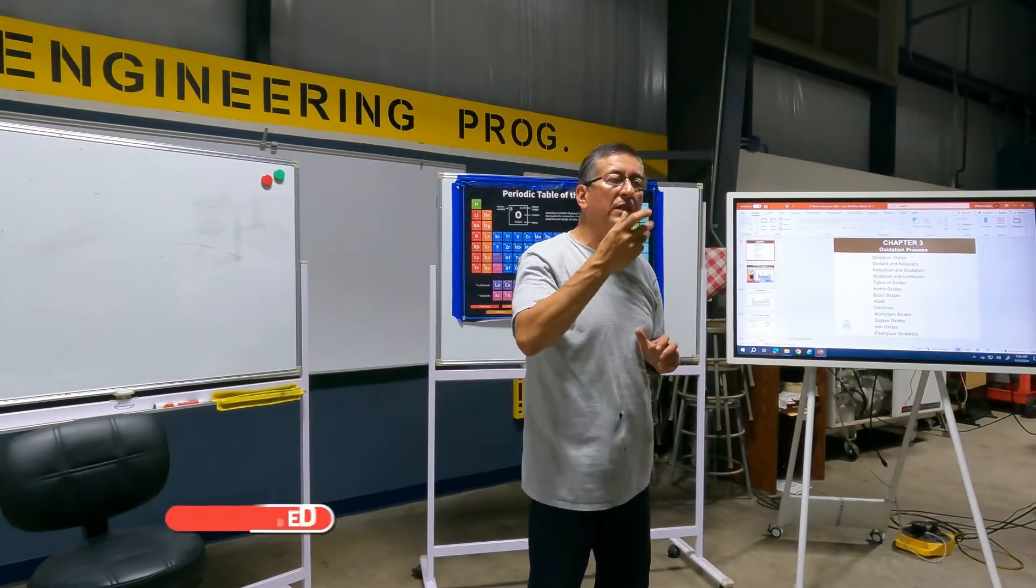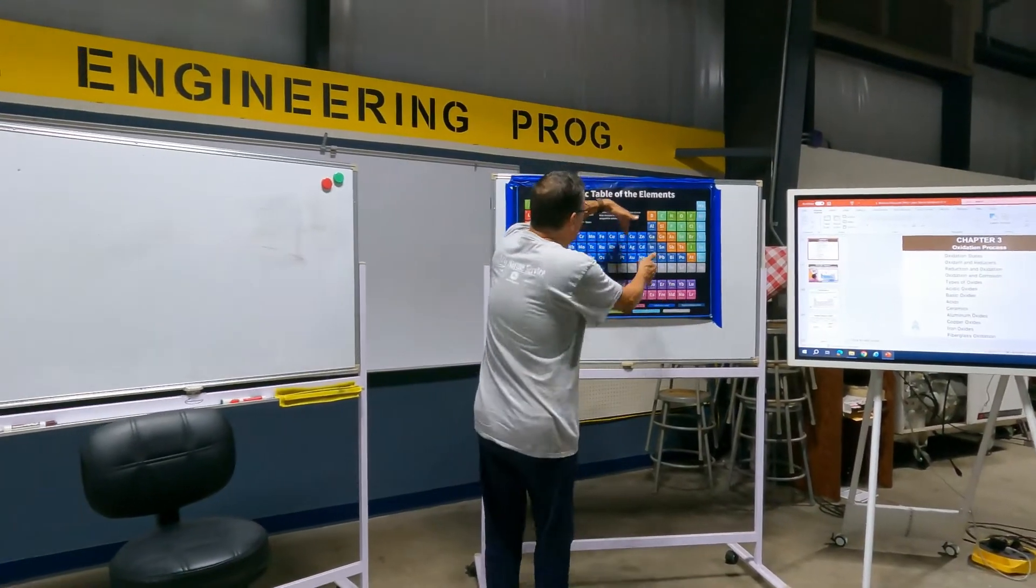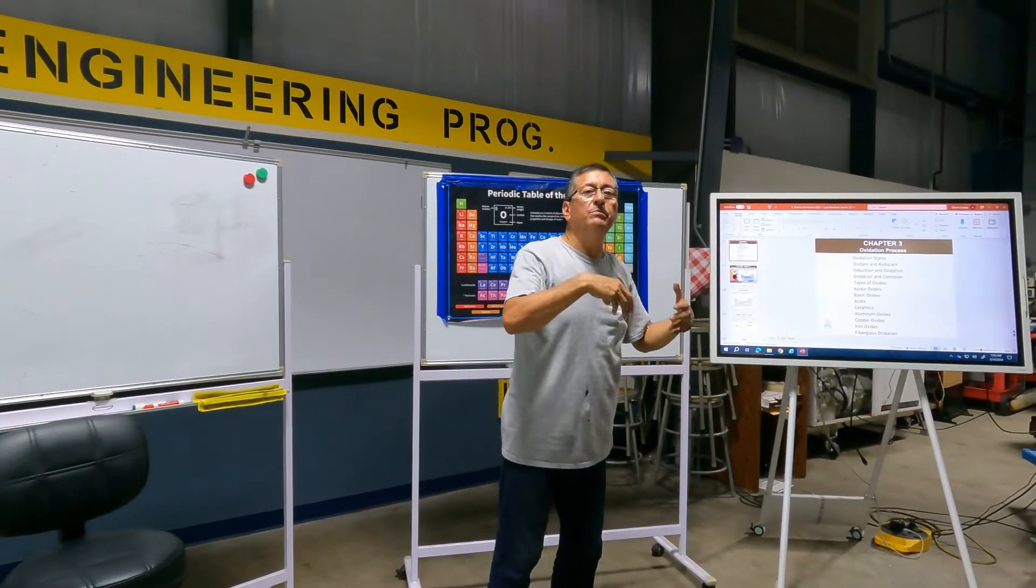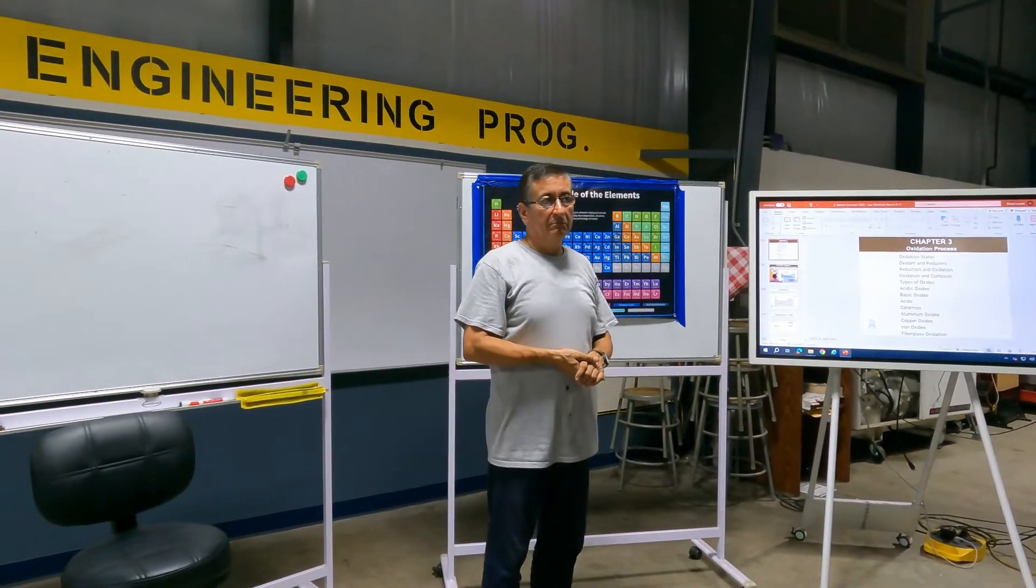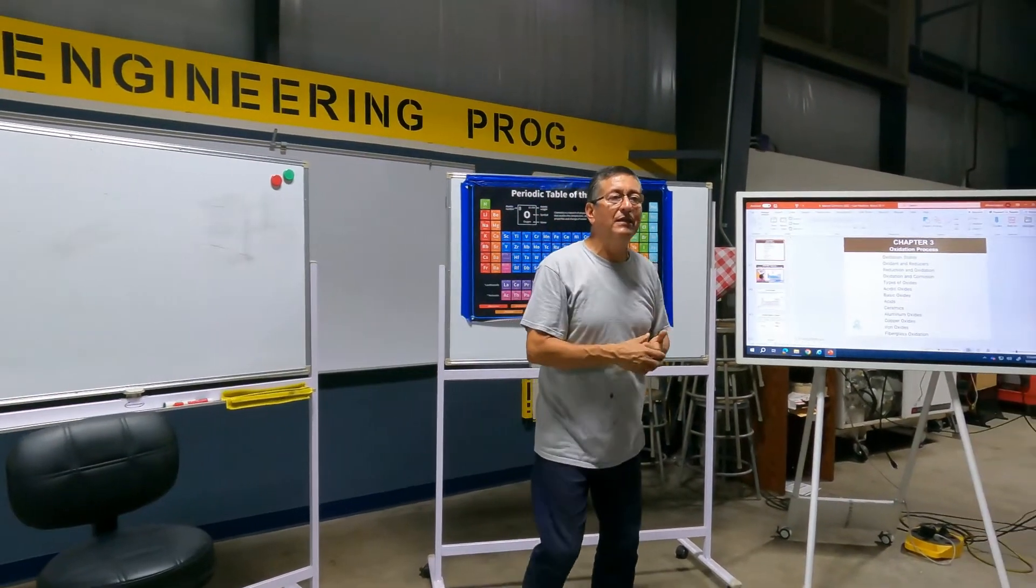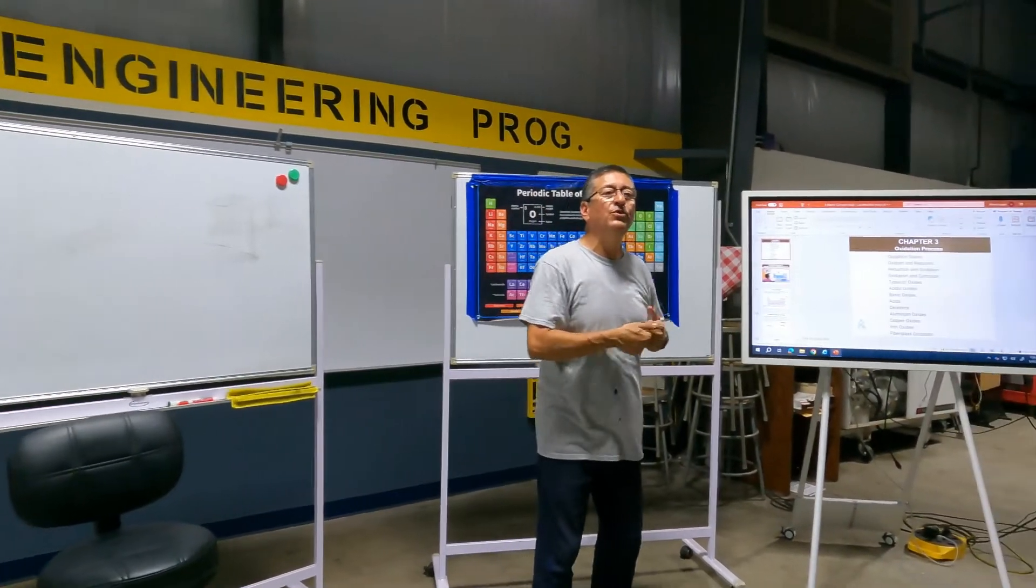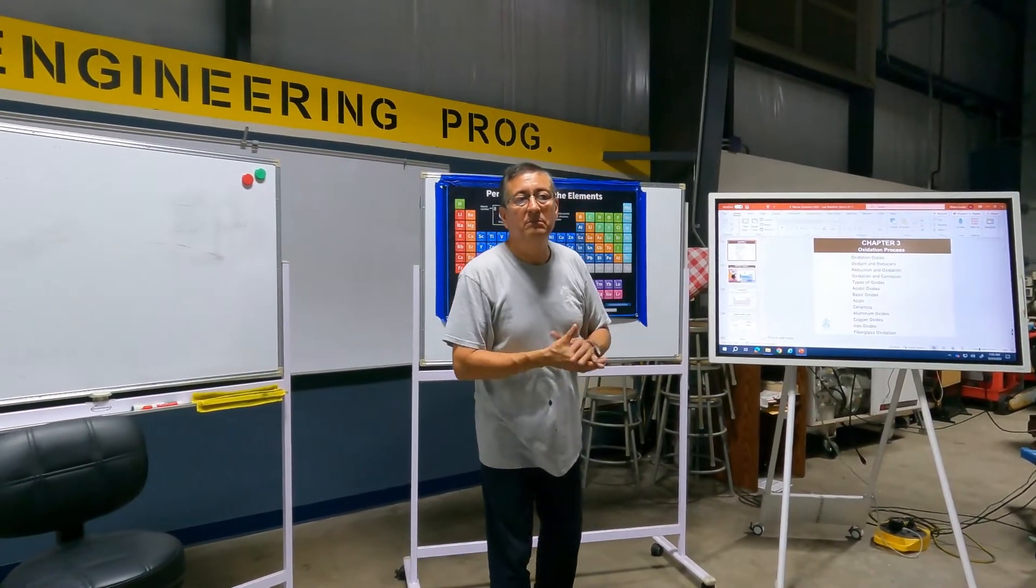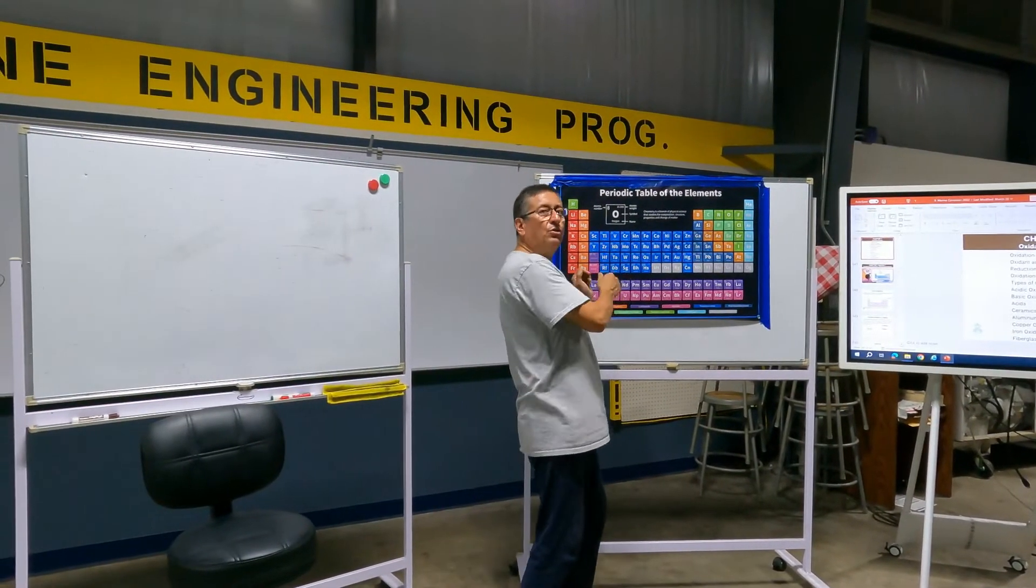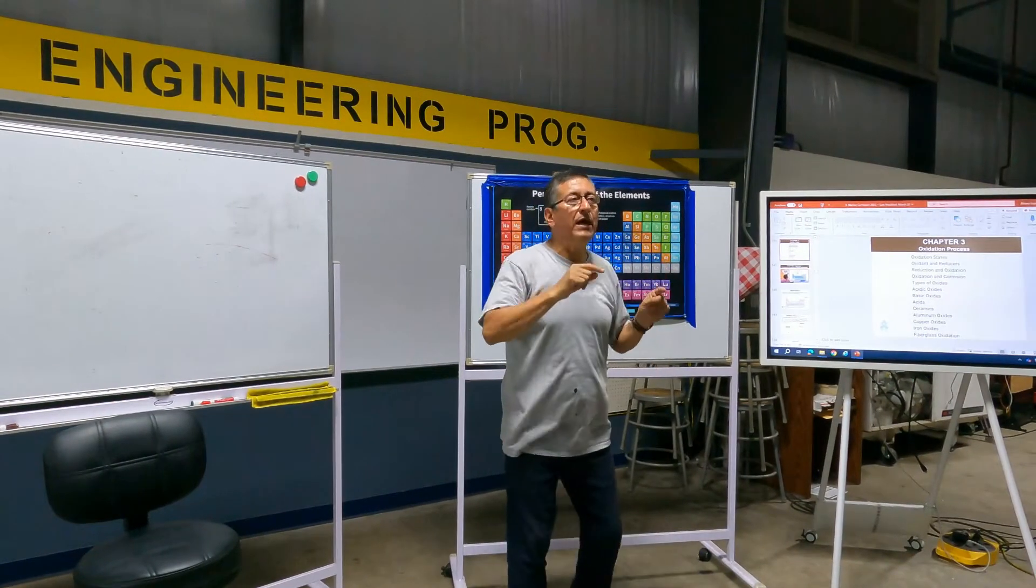The elements located here, in combination with oxygen, produce acidic oxides. And the elements located here, metals, in combination with oxygen, produce basic oxides. The acidic oxides in combination with water create acids, and the basic oxides in combination with water produce bases. Those are alkali solutions and those are acidic solutions.